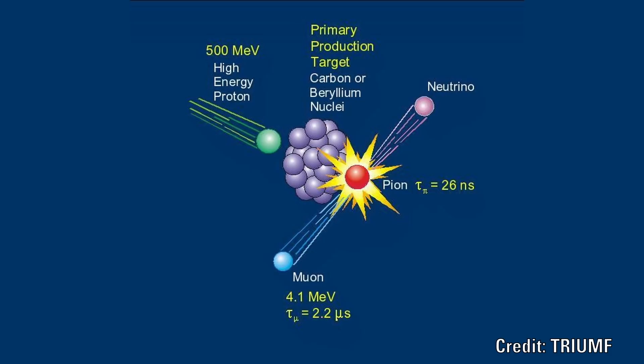The collision is thought to release energy which gets turned into matter. It creates something called a pion which almost immediately decays forming a muon. This muon lasts for a short period before decaying into an electron and some neutrino particles.